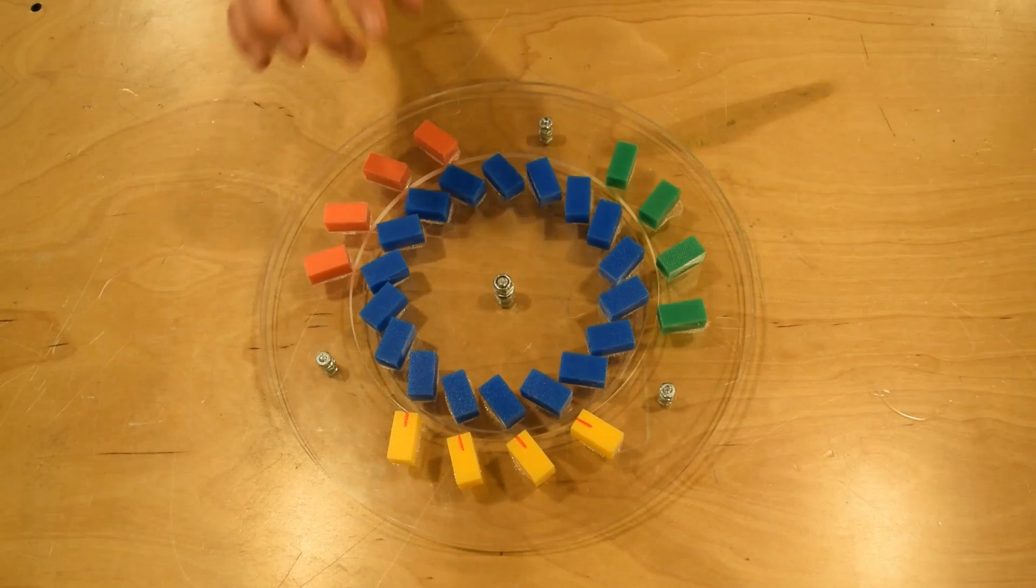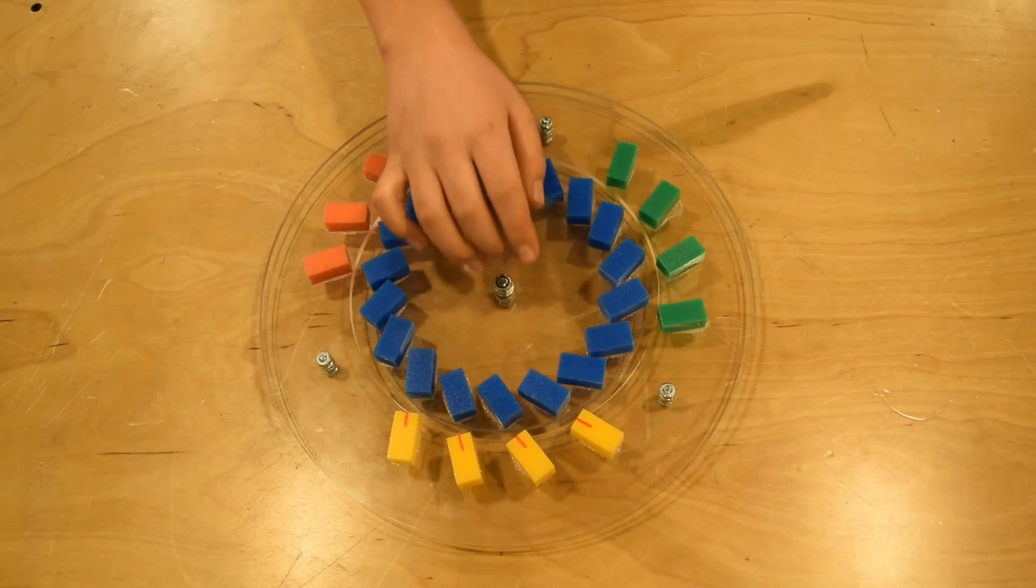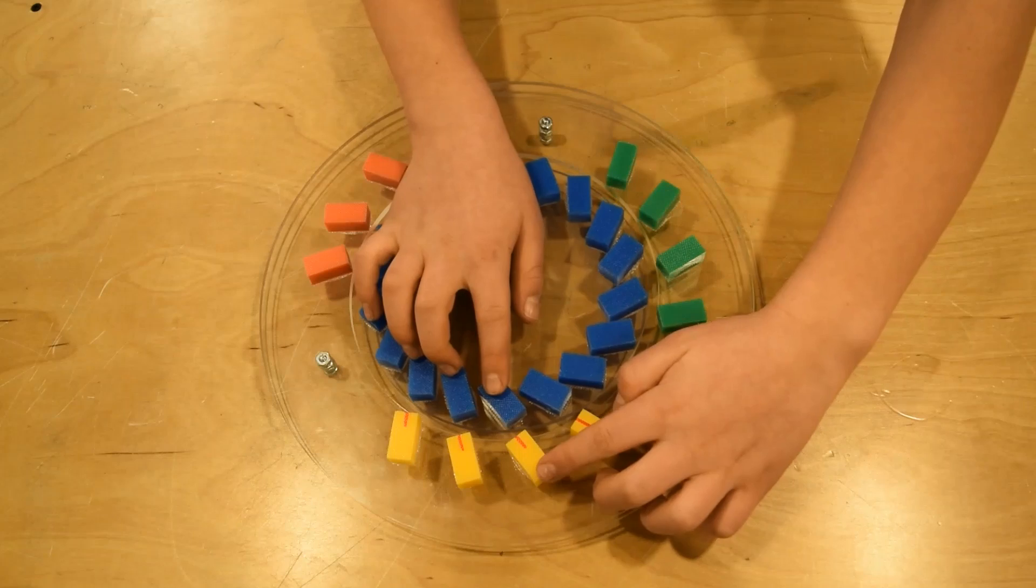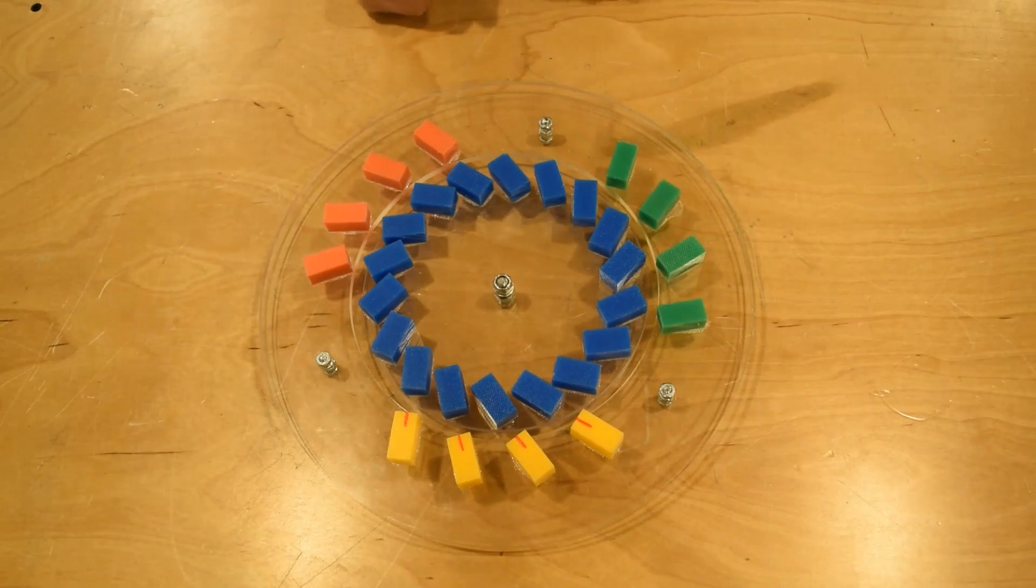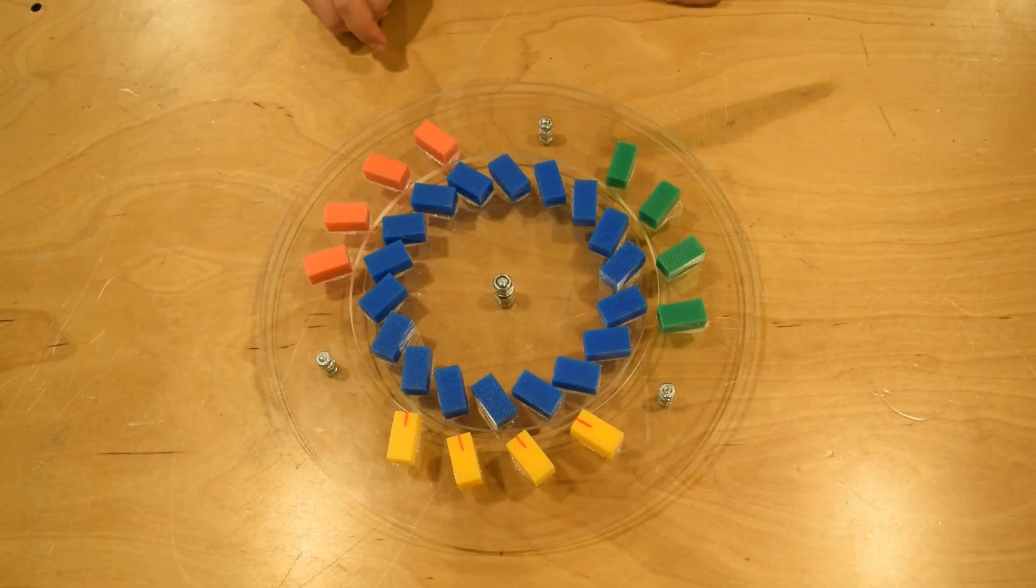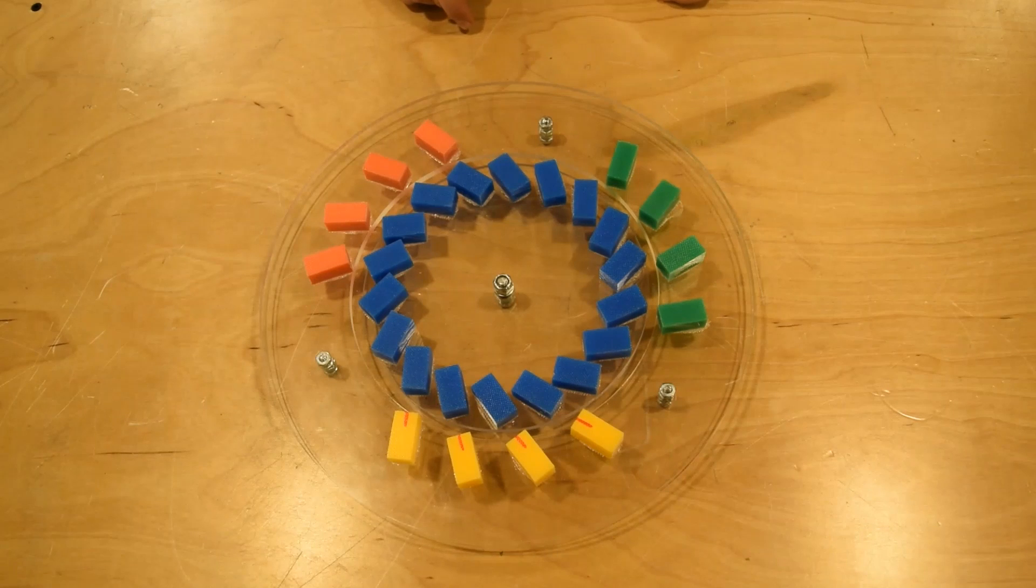Every time one of the blue rotor magnets lines up from one to the next of one of the stator magnets, this process is repeated over and over again. Each of the stator magnets, red, green, and yellow, become positive force two-thirds of the time, and negative force one-third of the time.